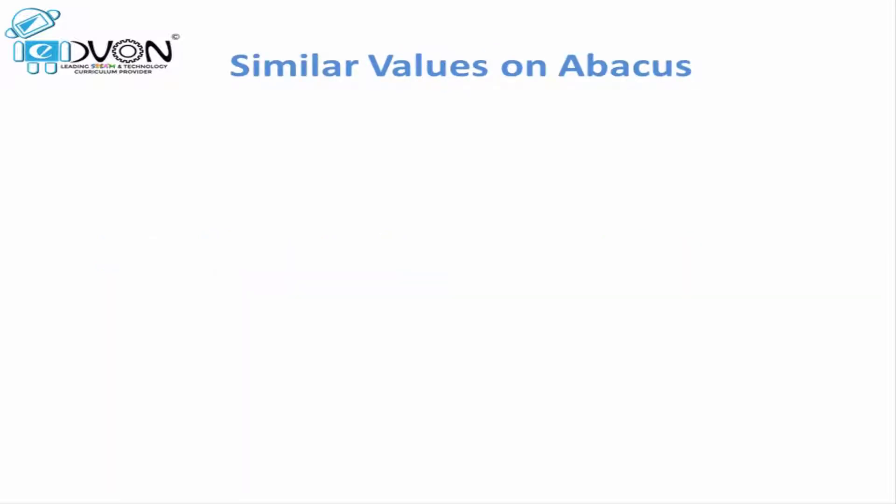When we were doing similar values on finger math, we learned that in similar values we have the same number of tens and same number of units. Let's take the first value, which is 11. To place 11 on abacus, we will move one lower beat up to touch the calculation bar on tens rod and units rod as well.